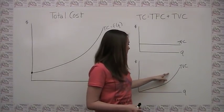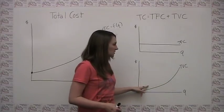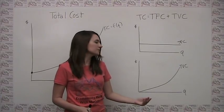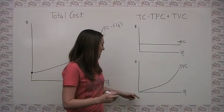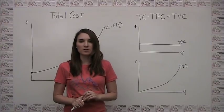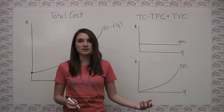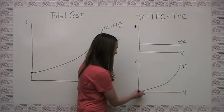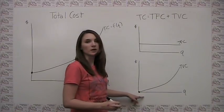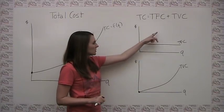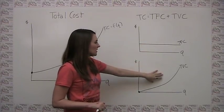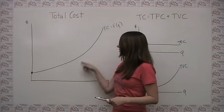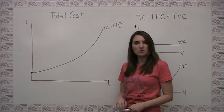Our total variable cost is upward sloping because it gets bigger as we produce more output. Variable cost is by definition zero when output quantity is zero, so the graph of total variable cost always starts at the zero-zero point. And graphically, if we were to add these two quantities together, we would in fact get something that looks like what we drew for total cost.